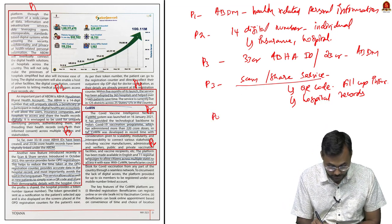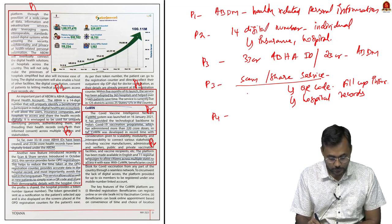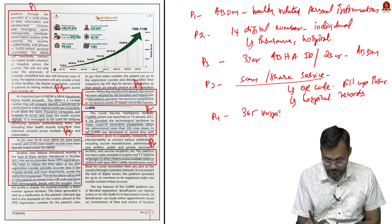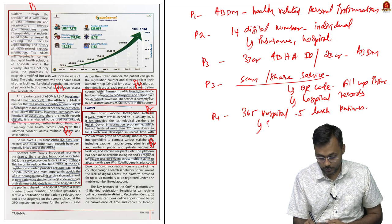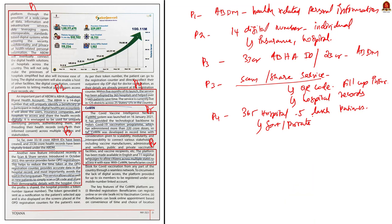Paragraph 4 provides data: right now around 365 hospitals have used this Scan and Share service, and 5 lakh patients have benefited — from both government and private hospitals. Paragraph 5 covers the CoWIN app created for vaccination in India, through which around 220 crore dosages of vaccines were administered for COVID.